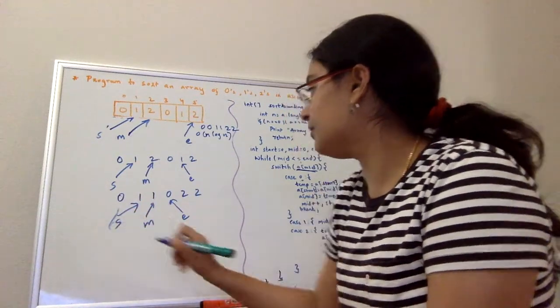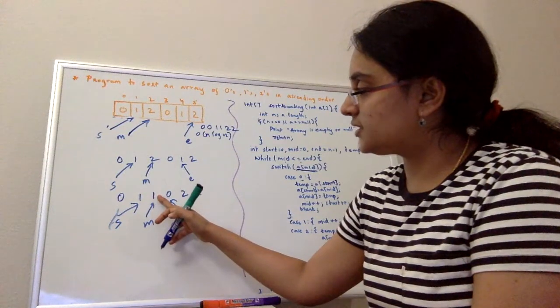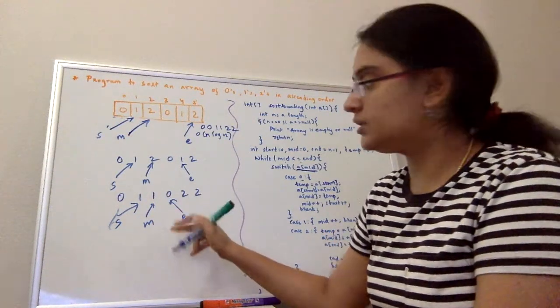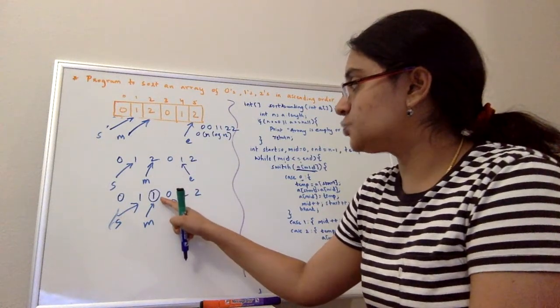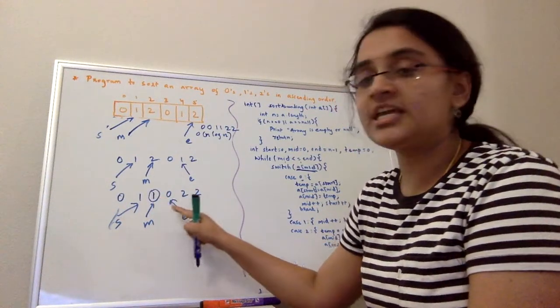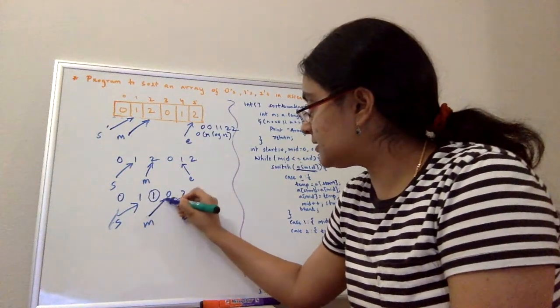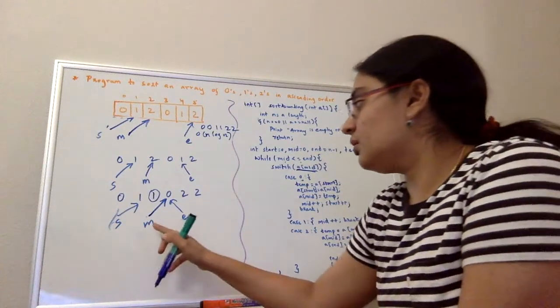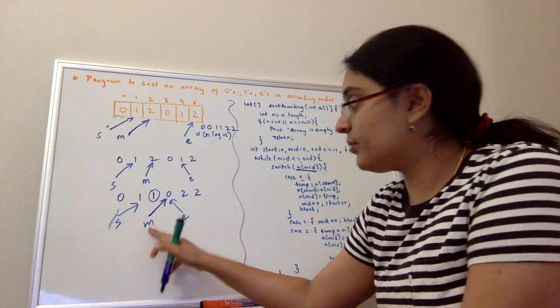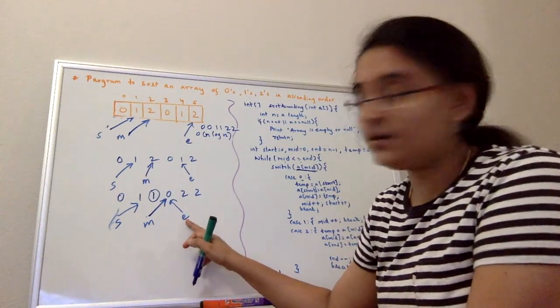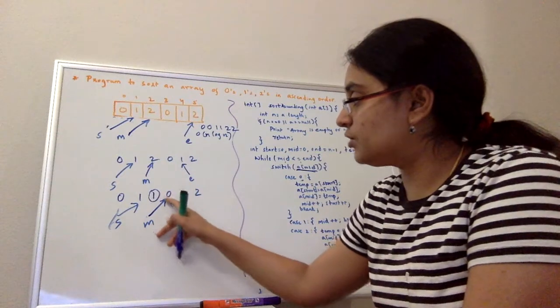Now mid will check: is array of mid less than end pointer? Now the mid is, array of mid is one. When it is one, it will just increment the mid pointer. So my new mid pointer is at zero now. After incrementing, it again checks whether mid is less than or equal to end. This is true, and mid is zero.